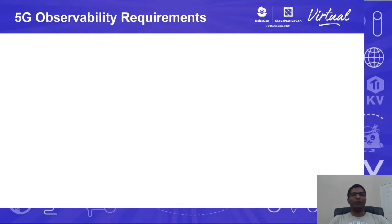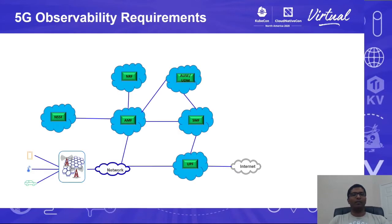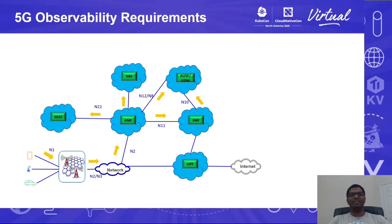In a 5G core network, there are various virtual network functions deployed in multiple Kubernetes clusters across different geographic locations. This is a simplified network diagram of 5G core. Whenever a user equipment tries to register with the network or attach to the network, there are a series of 3GPP defined messages exchanged between various network functions over 3GPP defined interfaces before the user equipment can browse data or make a phone call.